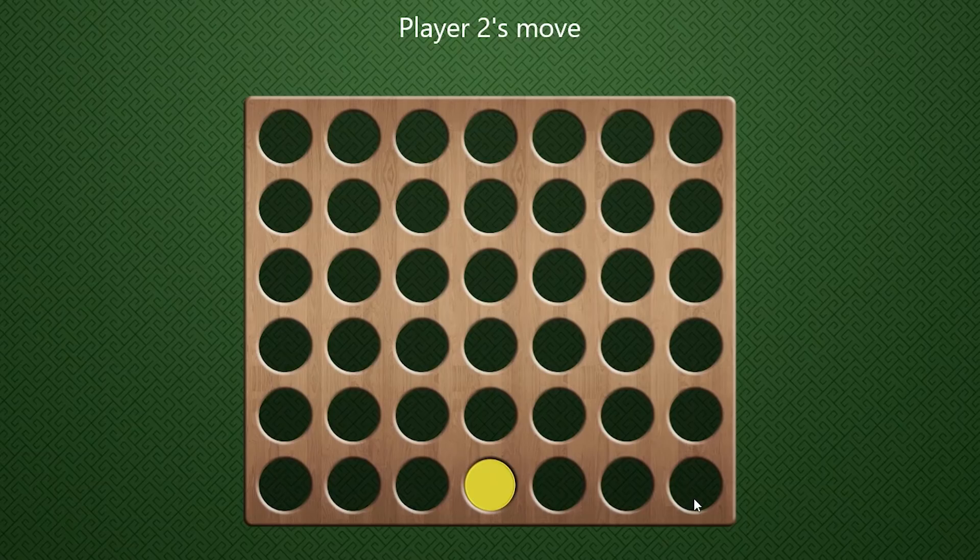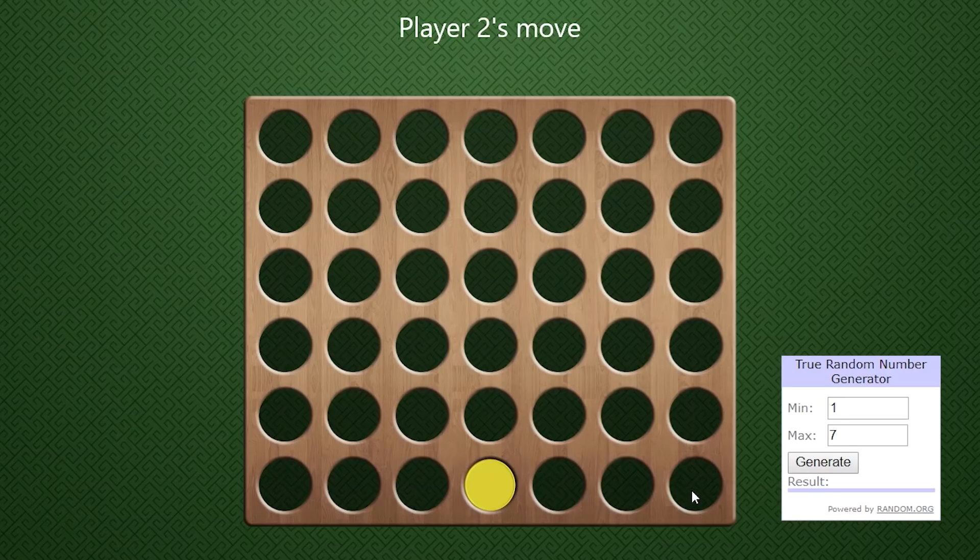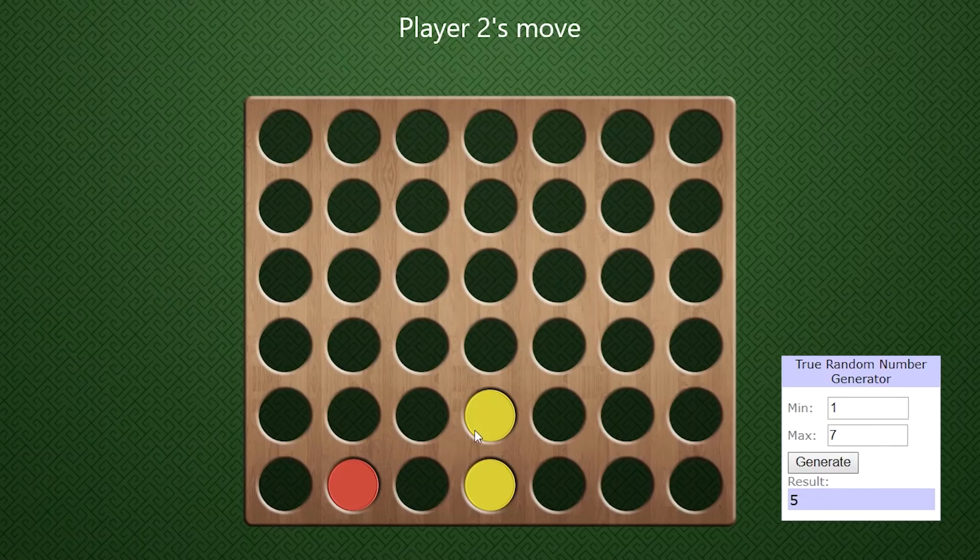So this is column one, this is column seven, so we'll pick a number from one through seven, and that's what this little widget is on the screen, and that will be where we drop it. So we generate the first number, gives us a two. So I'll play right in the center. Generate the second number, and that is a five. So it will go right there, our AI.